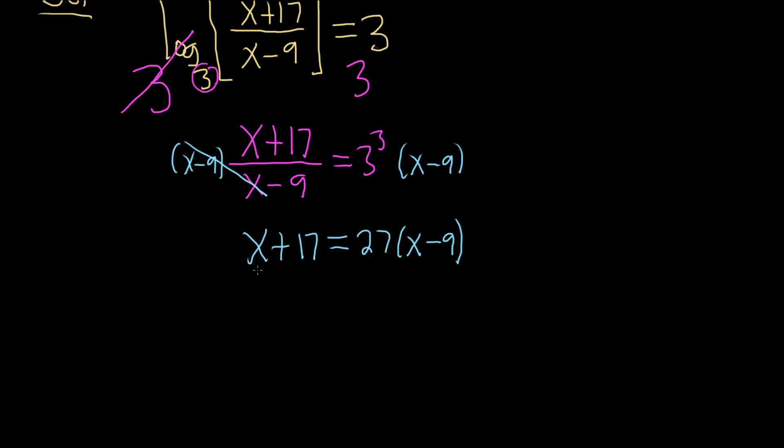Let's distribute that 27. So x plus 17 equals 27 times x is just 27x. And then 27 times 9, we could do it by hand, but I don't want to mess up. So I got negative 243.